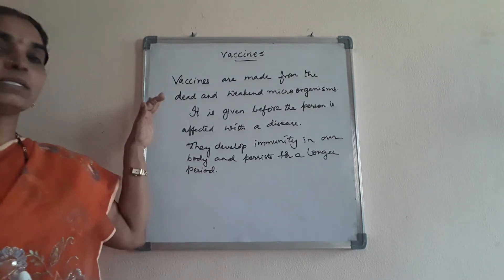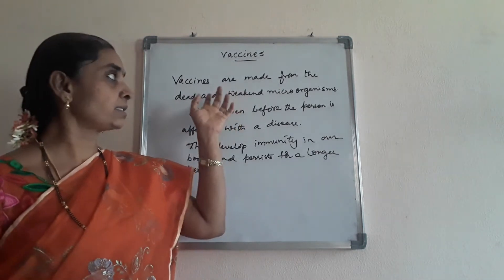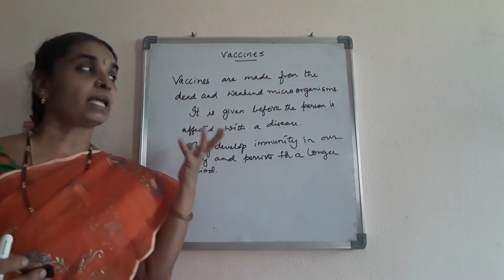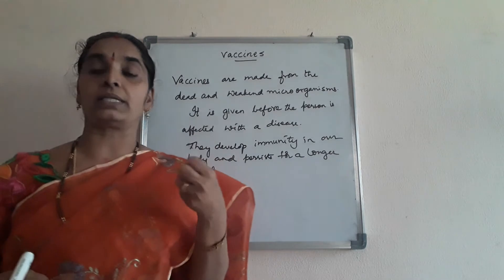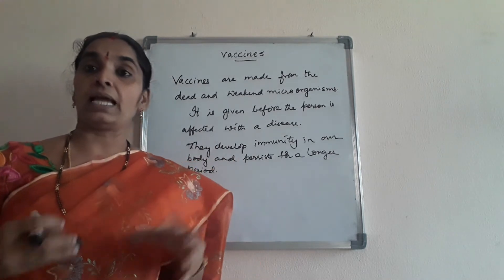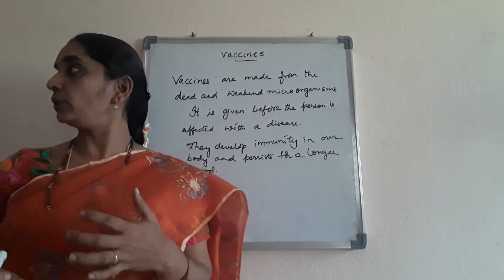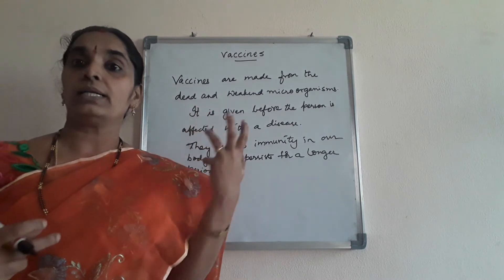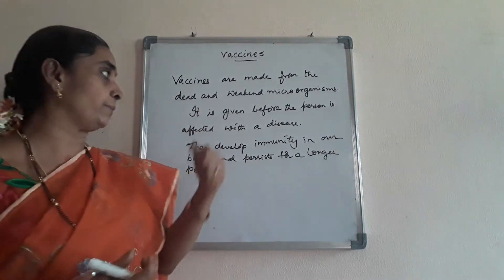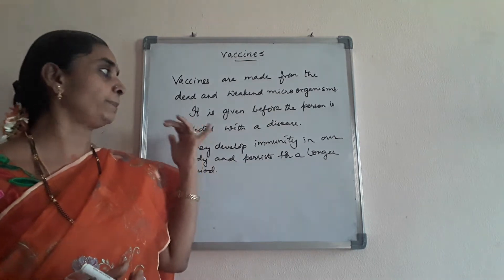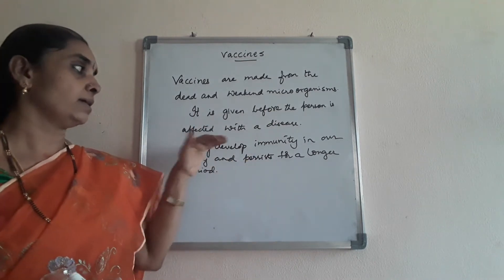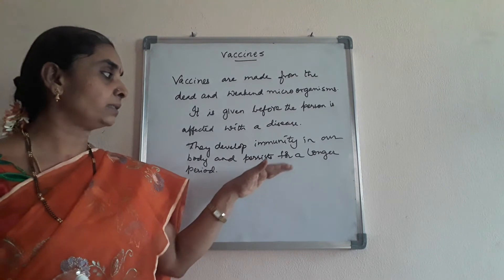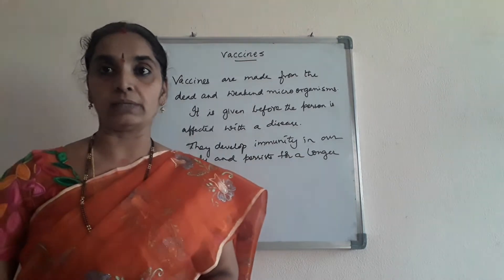So what are vaccines and how are they formed? Vaccines are made from dead and weakened microorganisms. They kill the disease-causing germs that enter our body and have the ability to develop antibodies in our body. They are given before the person is affected with the disease, develop immunity in our body, and persist for a longer period.